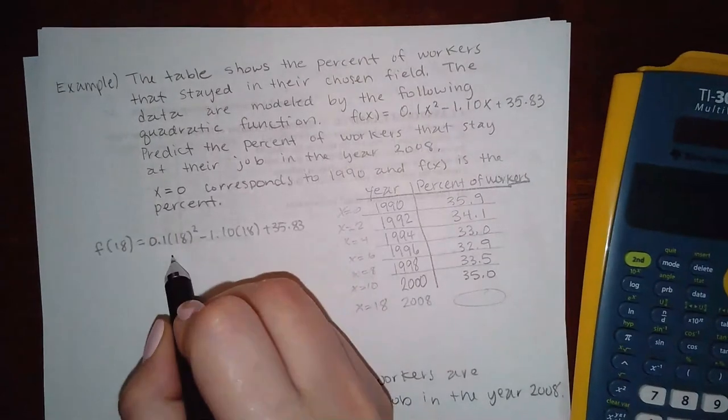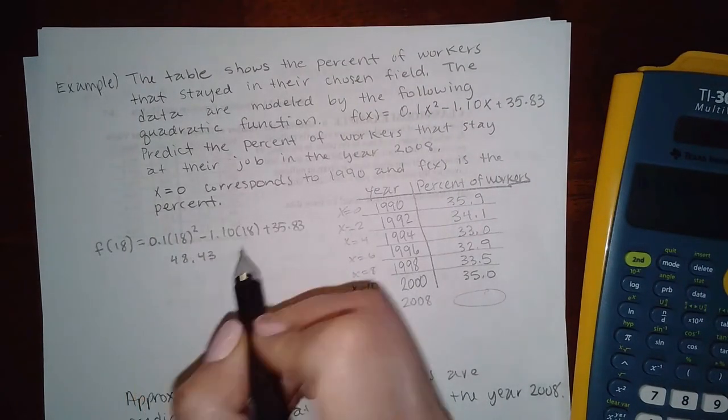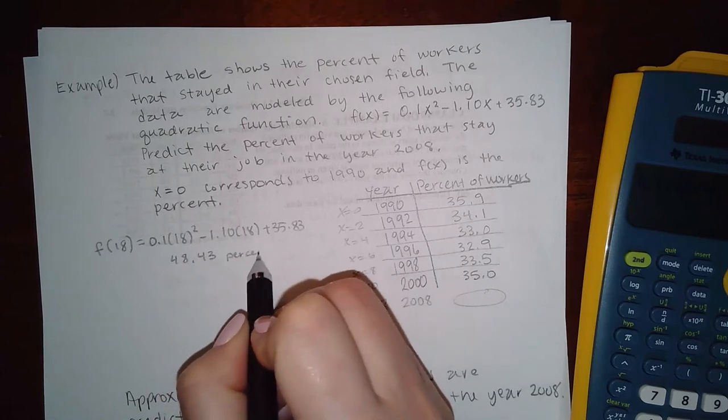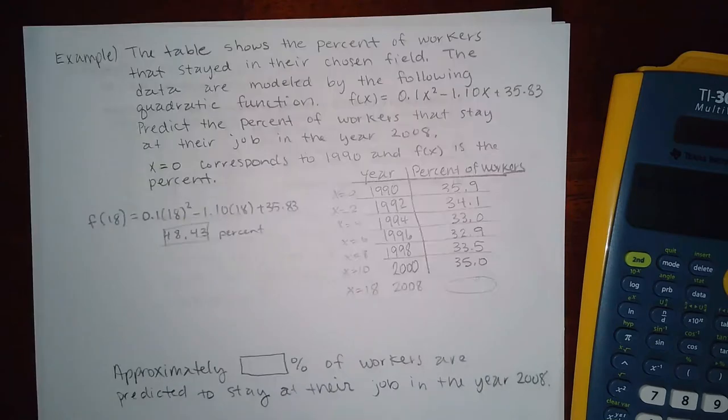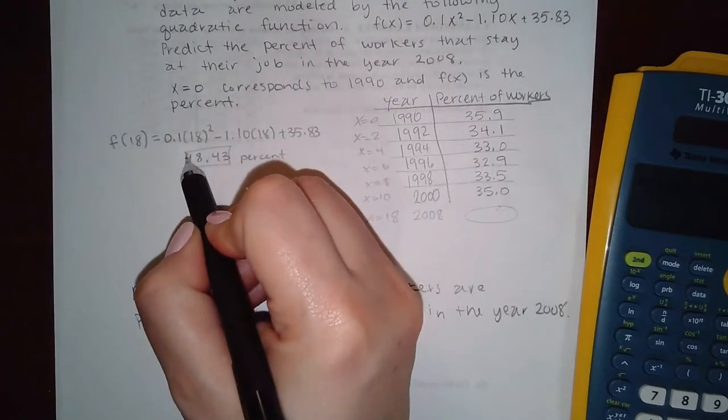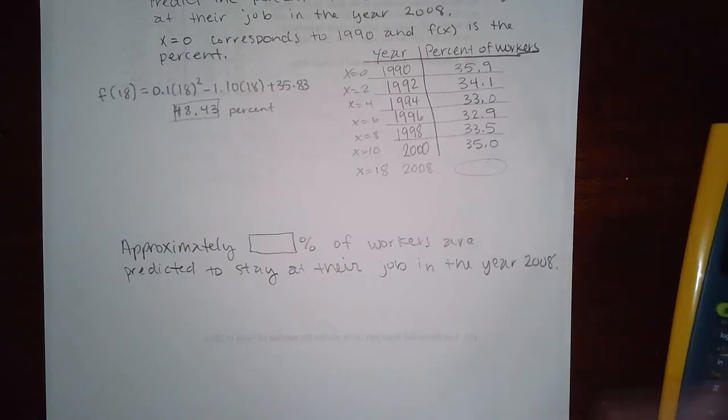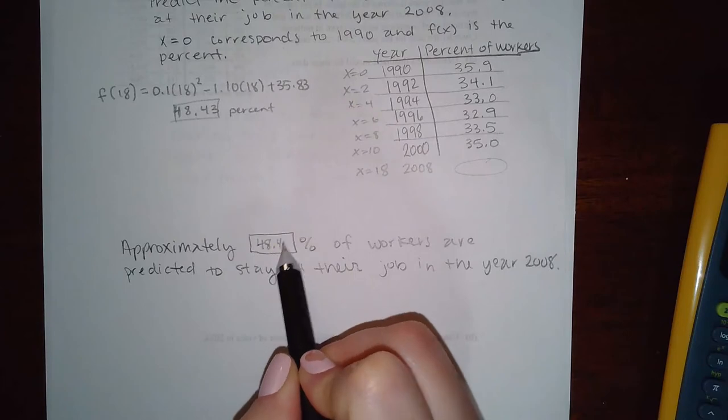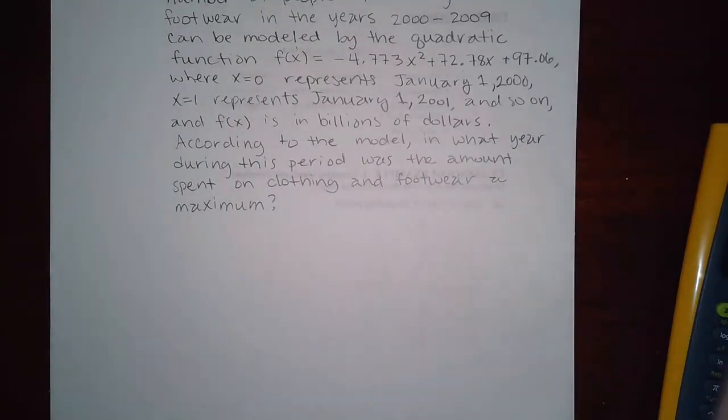We get 48.43 percent. And so that's what you would type in the computer in MyMathLab. That one's not too bad. Now here it says approximately, and that's where you type the 48.43 percent. So not too bad. Let's see another example.